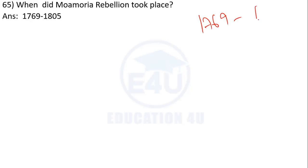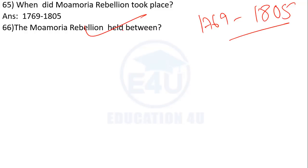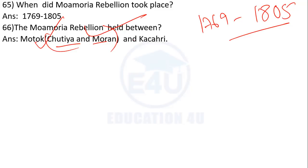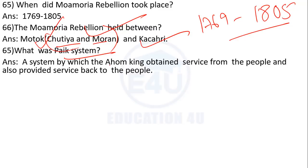The Moamoria rebellion — when did it first occur? It occurred in 1769 and again in 1805. The Moamoria rebellion involved the Mataks — the Sutiya and Moran people were called Matak, and the rebellion happened among the Kacharis.